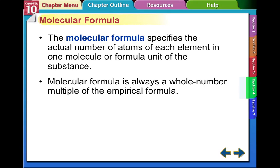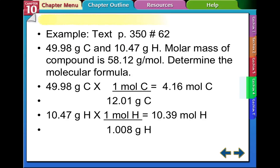Now we move into molecular formula. This specifies the actual number of atoms of each element in one molecule or formula unit of the substance. Molecular formula is always a whole number multiple of the empirical formula. Here is an example from page 350, number 62. In this problem, we have 49.98 grams of carbon and 10.47 grams of hydrogen. The entire molecular mass of this compound is 58.12 grams per mole, and we need to determine the molecular formula.